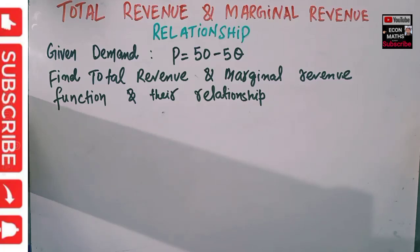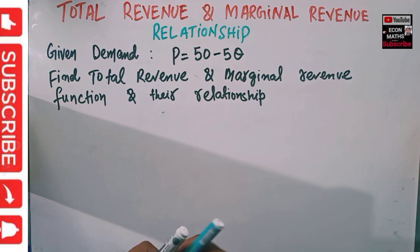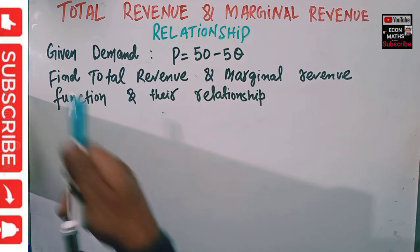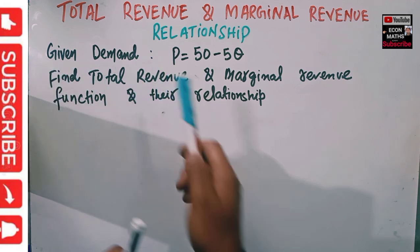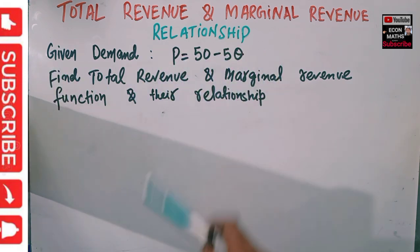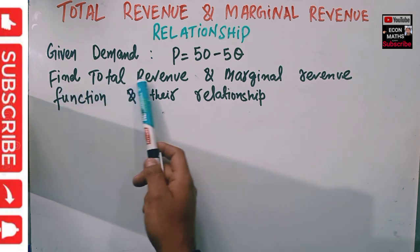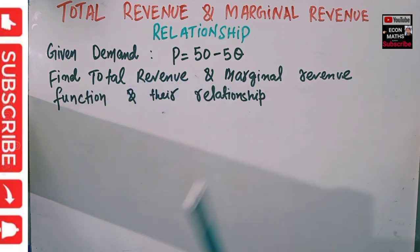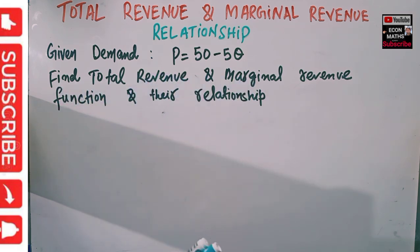In this short video, we will learn the relationship between total revenue and marginal revenue and how to calculate them. The question is: given demand as P = 50 - 5Q, where P is the price and Q is the quantity, we need to find out the total revenue and marginal revenue functions and their relationship, if any.